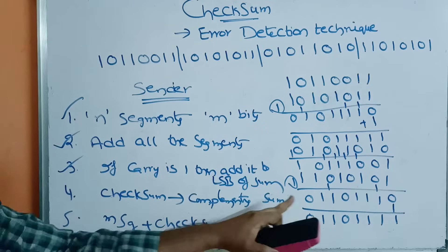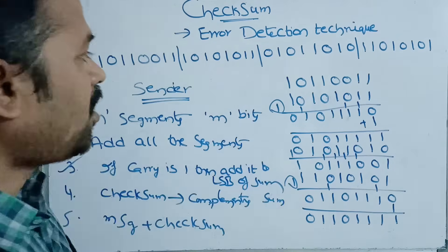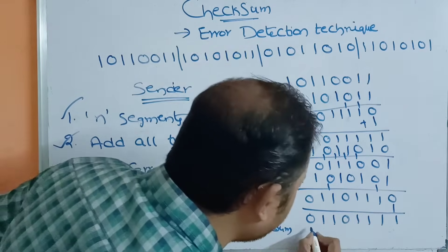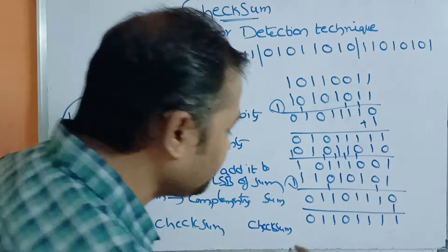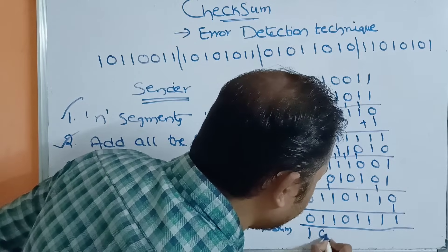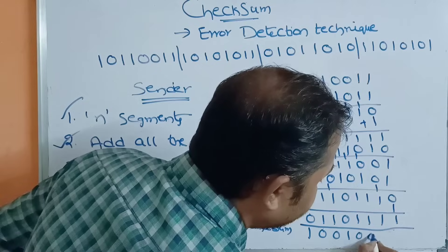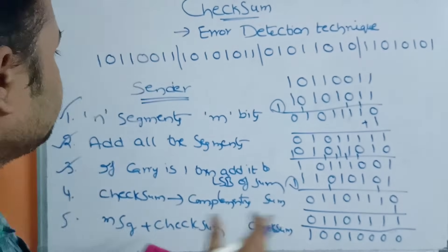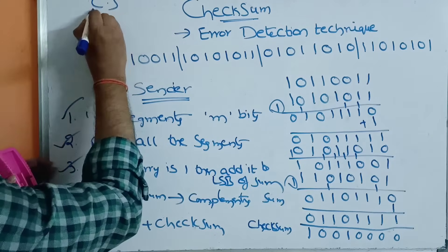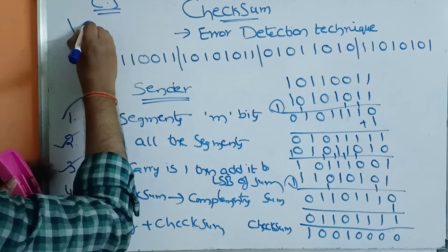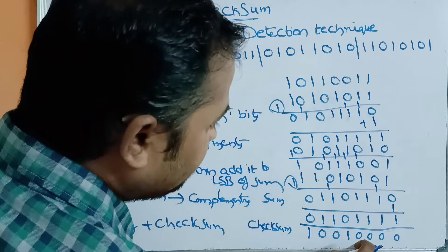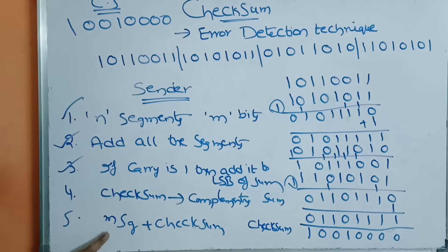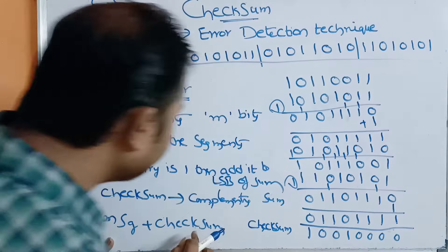So how we get the checksum: by complementing the sum. So we complement the sum — 0s are converted to 1s and 1s are converted to 0s. This gives us the checksum value, which is 11001101 followed by four 0s. The sender now sends this message along with the checksum.